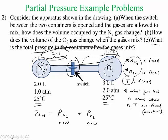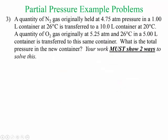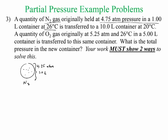Let's go to the next slide. So we have a quantity of N2 and it's under these conditions. So you have N2, and it's at 4.75 atm, and it's in a 1 liter container, 1.00, and it's at the temperature, this gas is at 20 degrees Celsius.